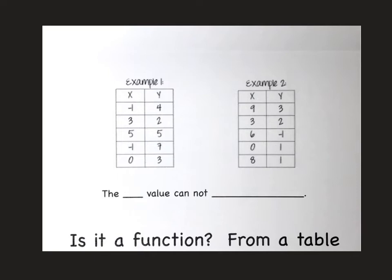Next tab says from a table. In this one, it's almost the same. This setup is very similar to when there was just a circle drawn around this and called a map. Instead of input values, it's already labeled as X. Instead of output values, it's labeled as Y. So when I fill out these lines at the bottom, this is going to say the X value cannot repeat. The X value cannot repeat. Simple as that.